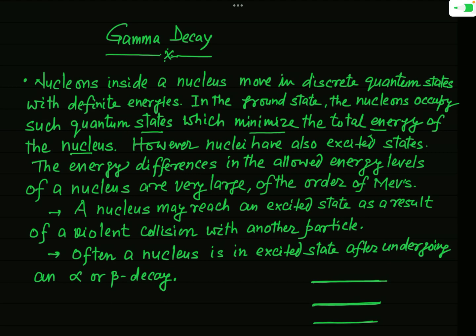The general process of excitation of an atom is not applicable in the case of nucleus excitation. A nucleus may reach an excited state as a result of violent collision with another particle. Normally, when alpha and beta decay take place, the nucleus is generally found in some excited state — the daughter nuclei are in general obtained in an excited state.